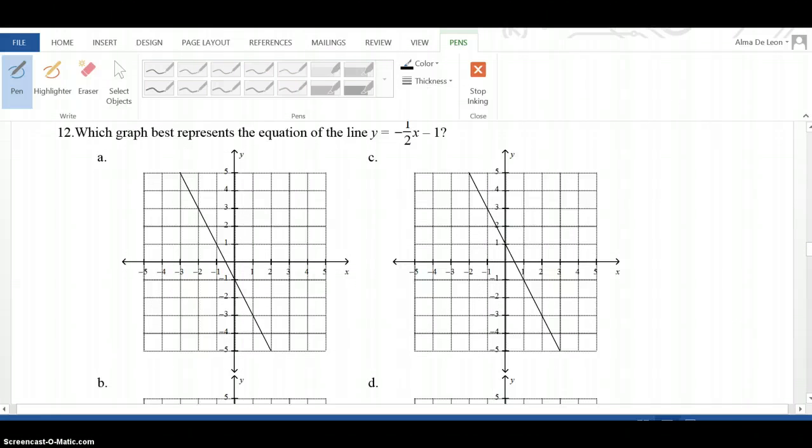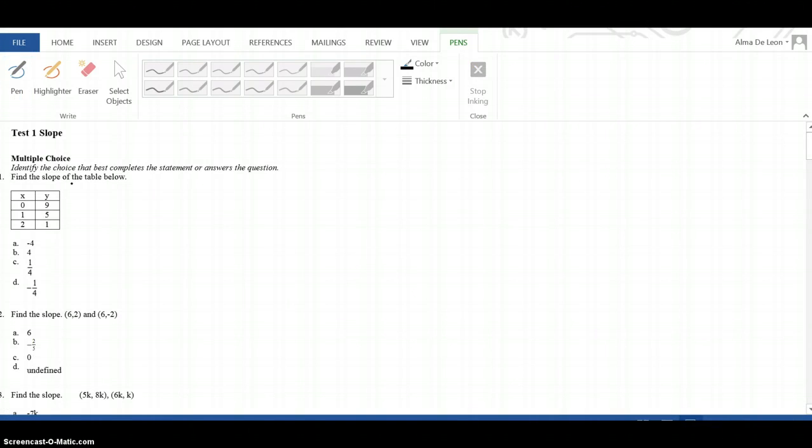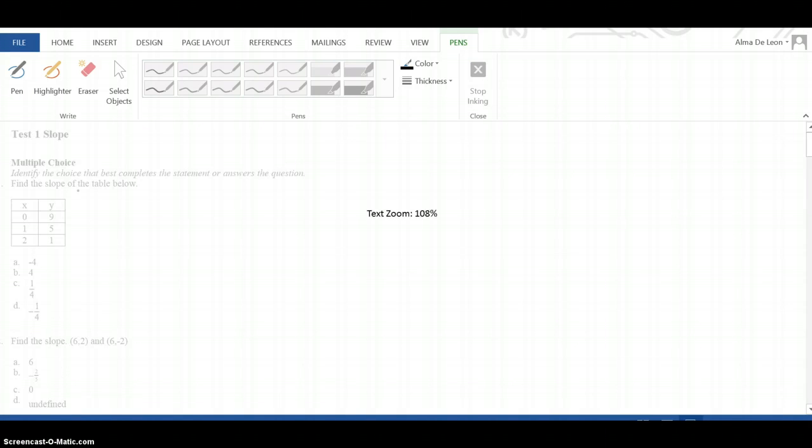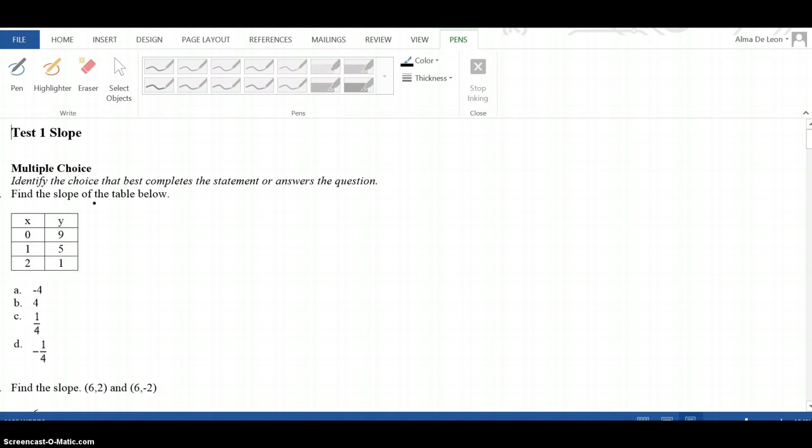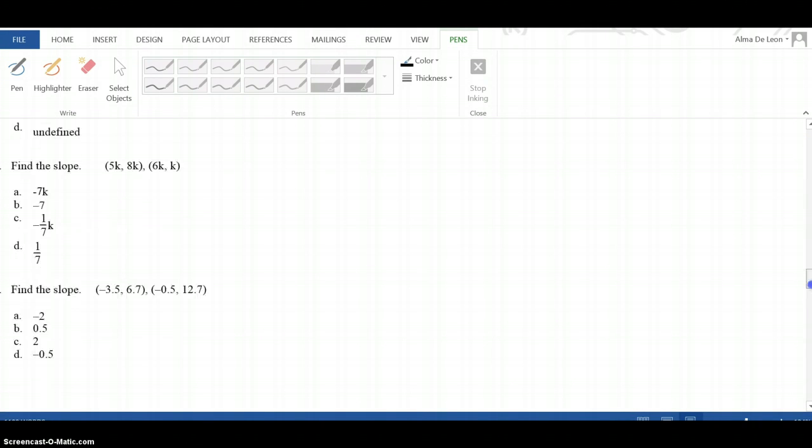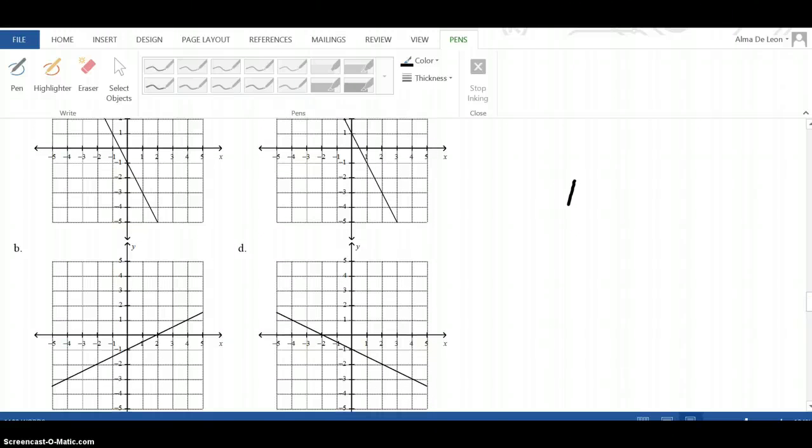Number 12: Which graph best represents the equation of the line y equals negative one-half x minus 1? Looking at that equation, I know that my line has to go down. It has to be negative because that slope is negative. So I can already cross out B because B is a line that's going up.